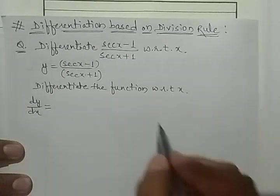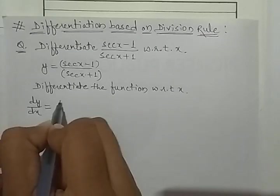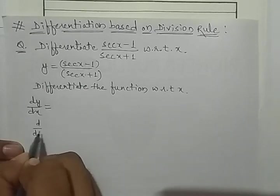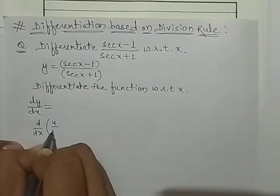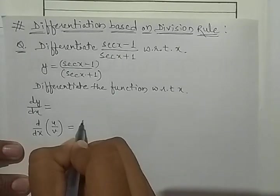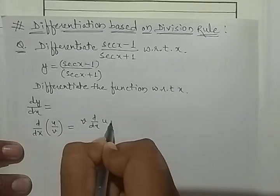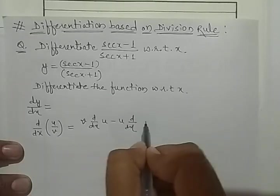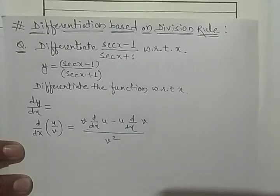What is the division rule? Division rule is: d by dx of u upon v is equal to denominator times d by dx of numerator, minus numerator times d by dx of denominator, all divided by the square of the denominator.